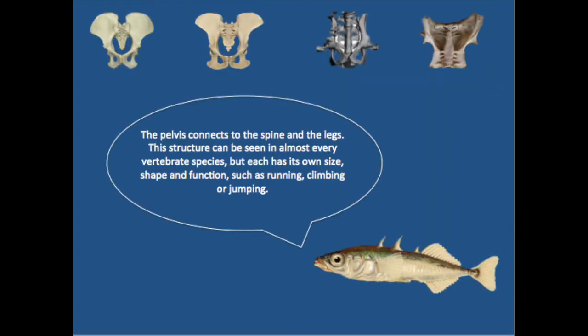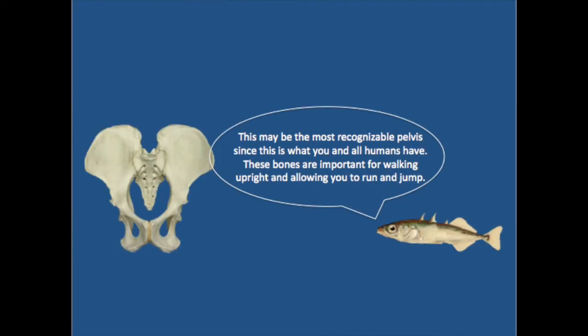The pelvis connects the spine and legs. This structure can be seen in almost every vertebrate species, but each has its own size, shape, and function, such as running, climbing, or jumping. This may be the most recognizable pelvis, since it is what you and all humans have. These bones are important for walking upright and allowing you to jump and run.